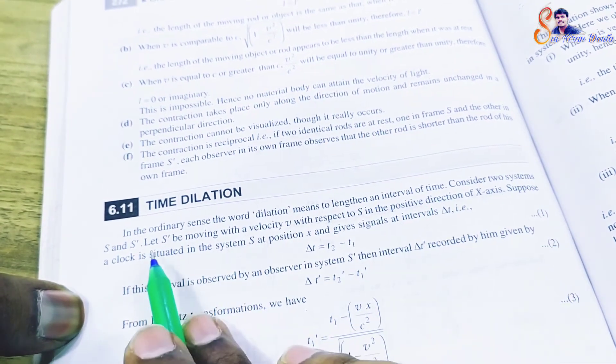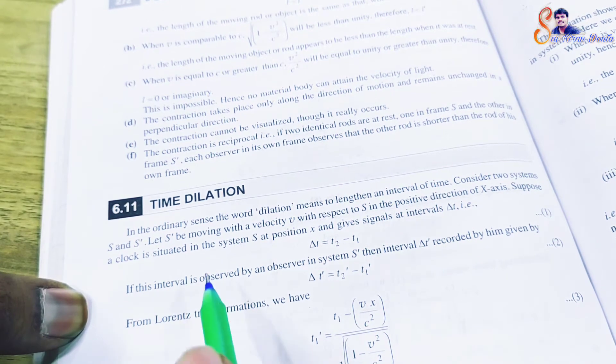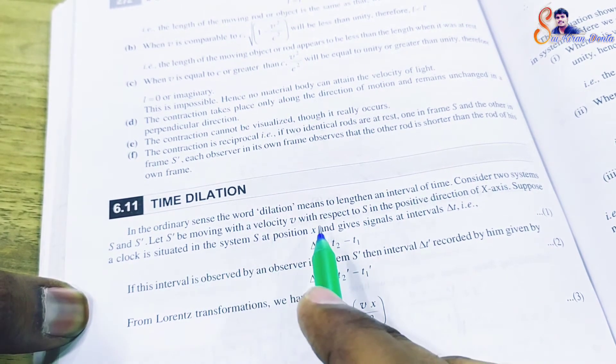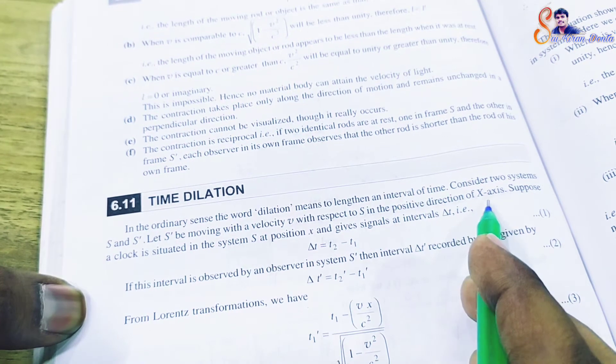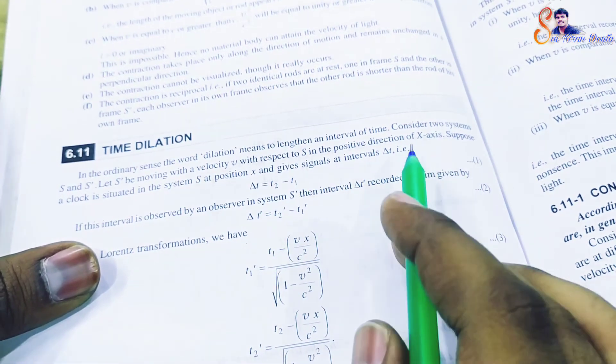Consider two systems S and S dash. Let S dash be moving with velocity v with respect to S in the positive direction of the x axis.